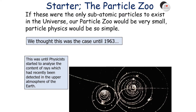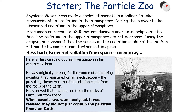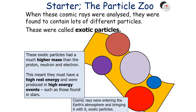If these were the only subatomic particles to exist, our particle zoo would be very small and particle physics would be very simple. We thought this was the case until around 1963, when physicists started to analyse the contents of cosmic rays recently detected in the upper atmosphere of the Earth. It was realised that cosmic rays do not just contain the particles found on Earth — the proton, neutron, and electron — because when analysed, they were found to contain lots of different particles, which were called exotic particles.